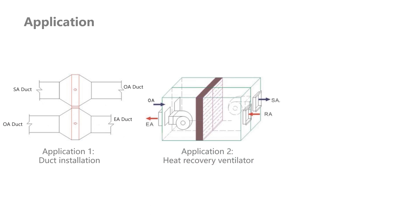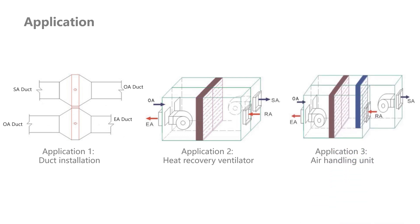The second is the heat recovery ventilator. Heat pipe heat exchanger can be installed inside heat recovery ventilation horizontally with the supply fan and exhaust fan to achieve energy recovery.